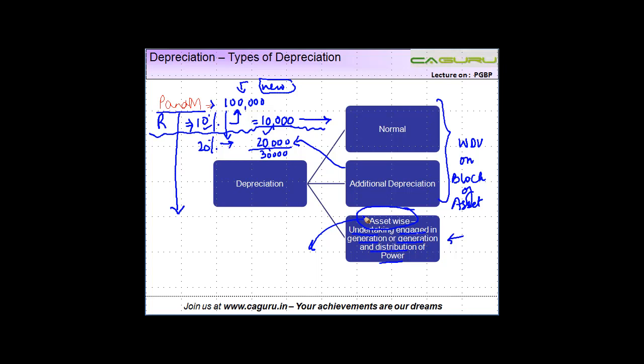Second, additional which is given to increase investment in the manufacturing sector. This is computed on the basis of written down value on the gross block of assets. And the third category is asset wise depreciation which is available only to undertakings which are engaged in the generation or generation and distribution of power.